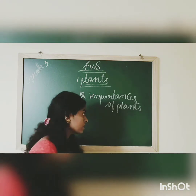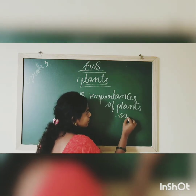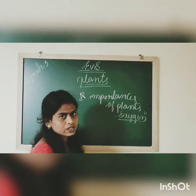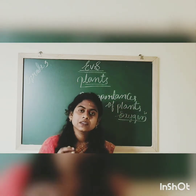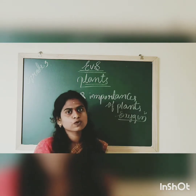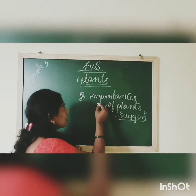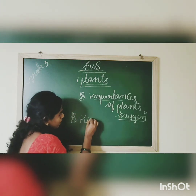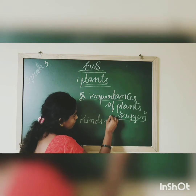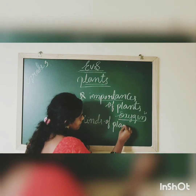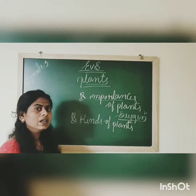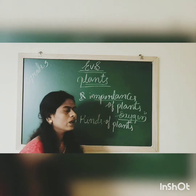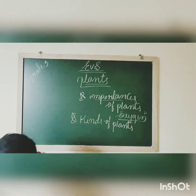Plants give us fresh air called oxygen. Oxygen is very important for our life — it is essential for the respiration process. The oxygen we inhale is produced by plants. We have also discussed about the varieties of plants. Let us recall the kinds of plants that we discussed in the last session.